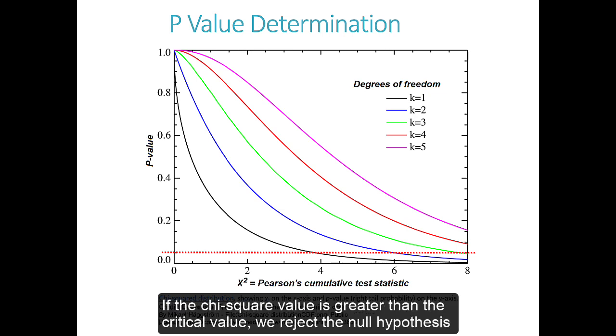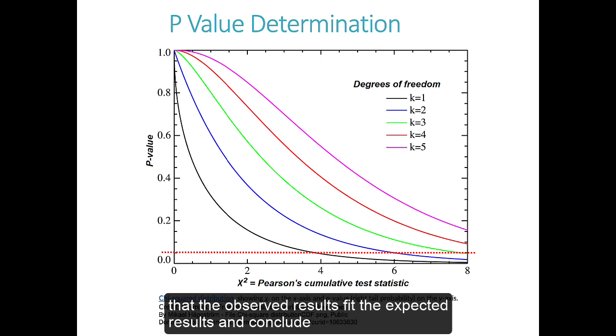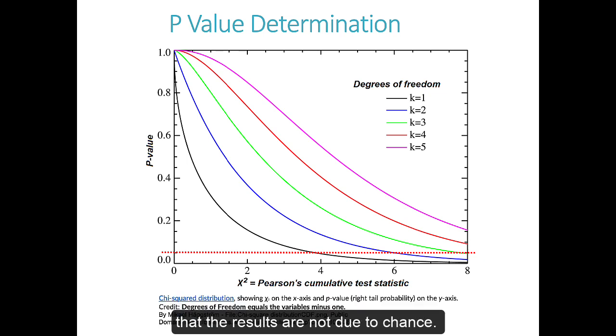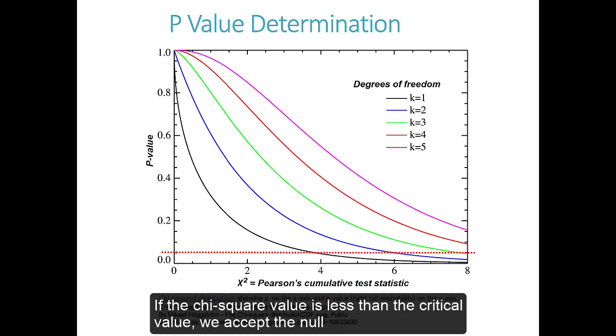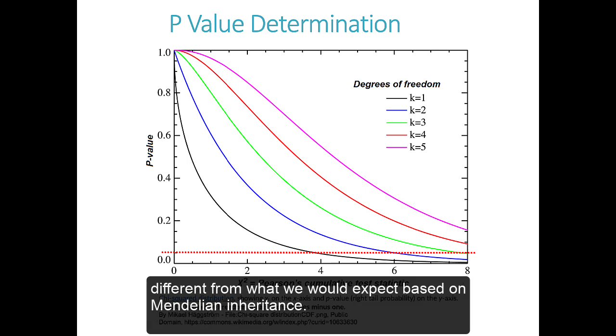If the chi-square value is greater than the critical value, we reject the null hypothesis that the observed results fit the expected results and conclude that the results are not due to chance. If the chi-square value is less than the critical value, we accept the null hypothesis and conclude that the results are not significantly different from what we would expect based on Mendelian inheritance.